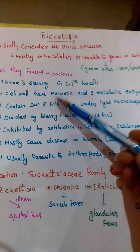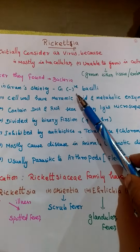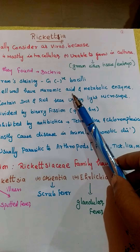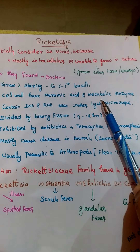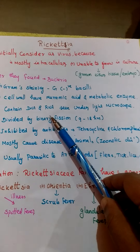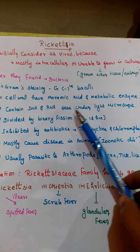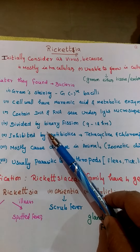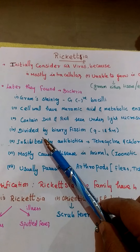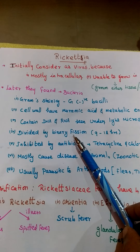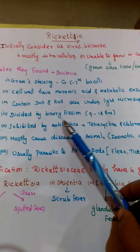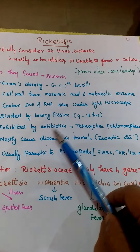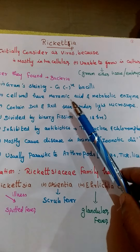Based on gram staining, it is a gram-negative bacilli. The cell wall has muramic acid and metabolic enzymes. It contains both DNA and RNA, seen under light microscopy. It divides by binary fission. One more important thing — it is inhibited by antibiotics. For these reasons, it is considered a bacteria.